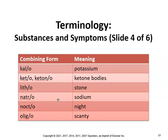Nocto gives us nocturia, meaning excessive urination at night — this applies to people who wet the bed. Oligo means scanty, so oliguria means scanty urination.